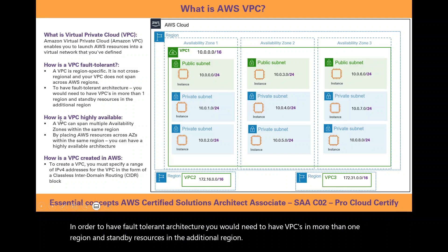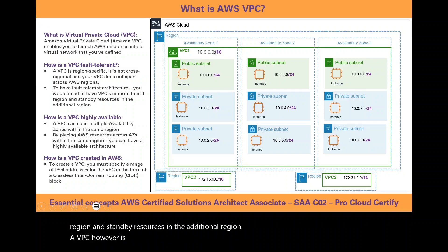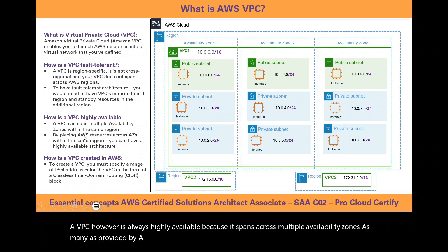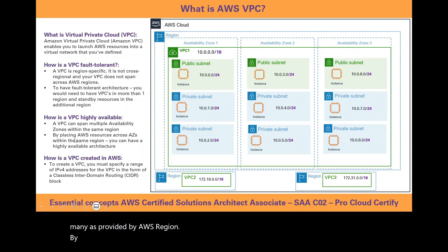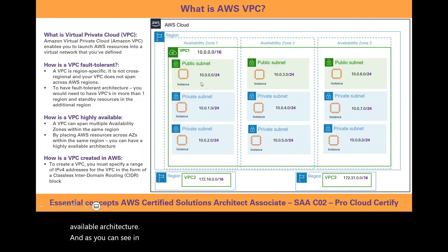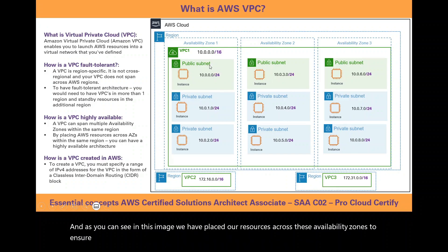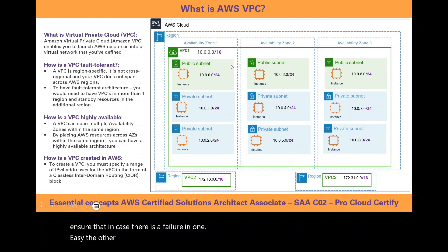A VPC is always highly available because it spans across multiple availability zones, as many as provided by the AWS region. By placing your AWS resources across availability zones within the same region, you have a highly available architecture. In case there is a failure in one AZ, the other availability zones can take over and minimize downtime and service disruption.